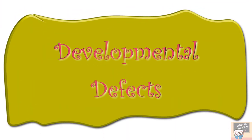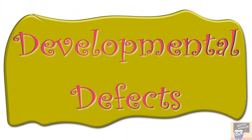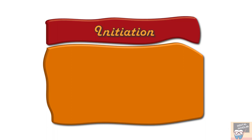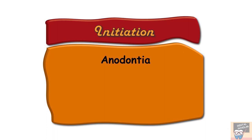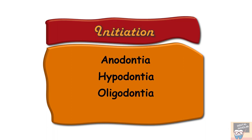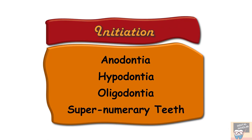Now let's look at a few developmental defects associated with tooth formation. First, the defects associated with initiation — a few examples include anodontia, hypodontia, oligodontia, and supernumerary teeth.